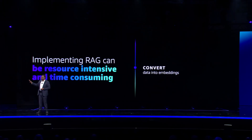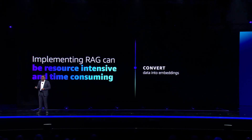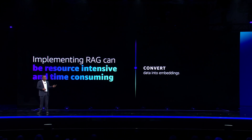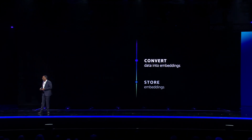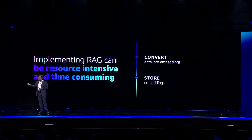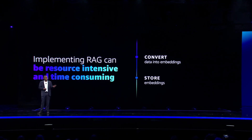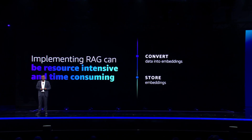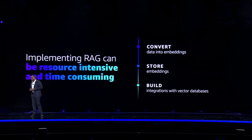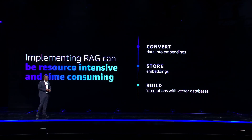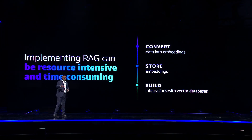However, implementing these RAG-based systems is extremely complex. Developers must first convert their data into vector embeddings. Then they need to store these embeddings in a vector database that can handle vector queries efficiently. Finally, they build custom integrations with the vector database to perform semantic searches, retrieve relevant text, and then augment the prompt. All of this process can take weeks, if not months, to build.